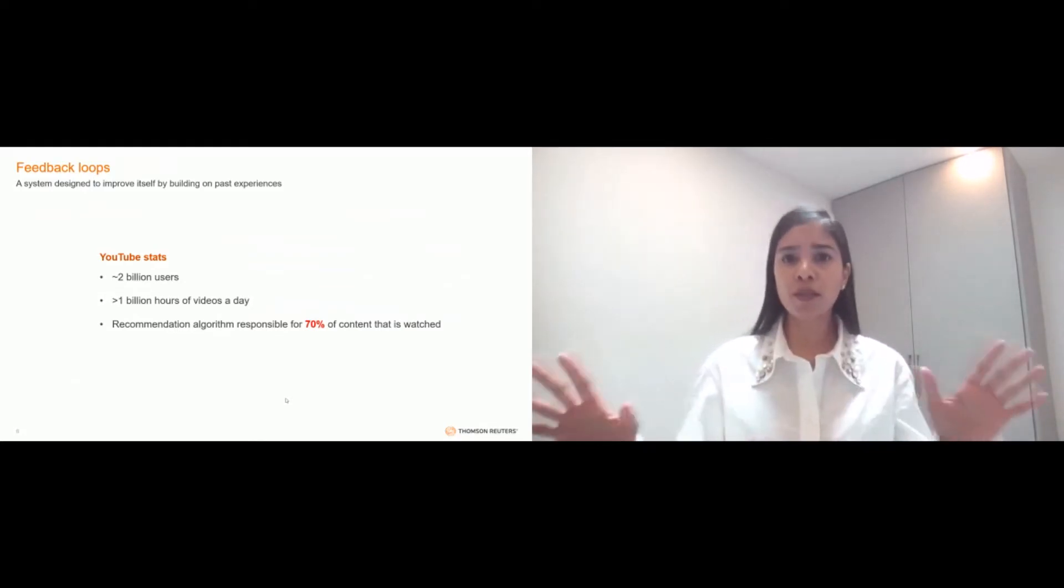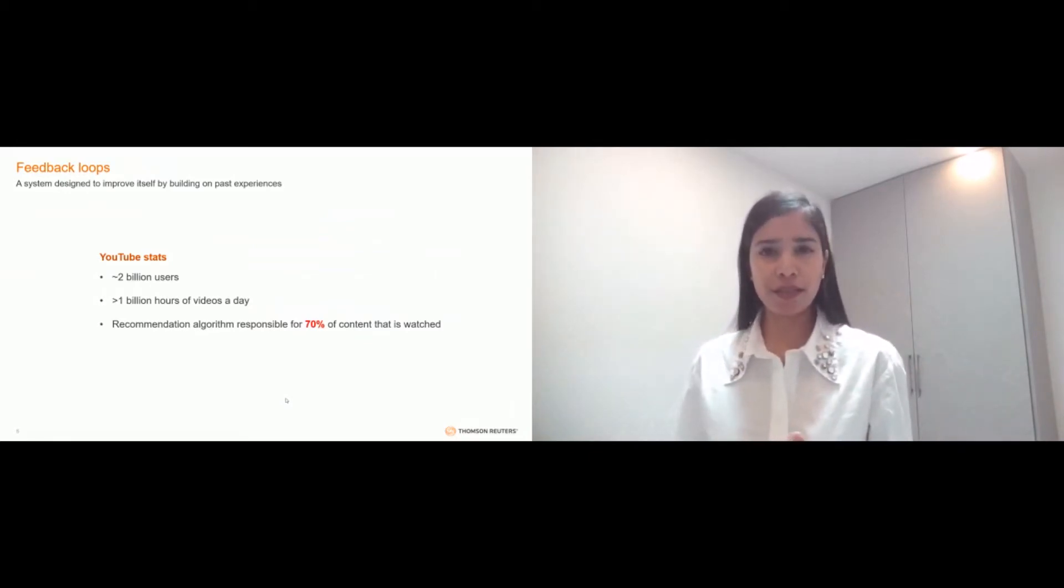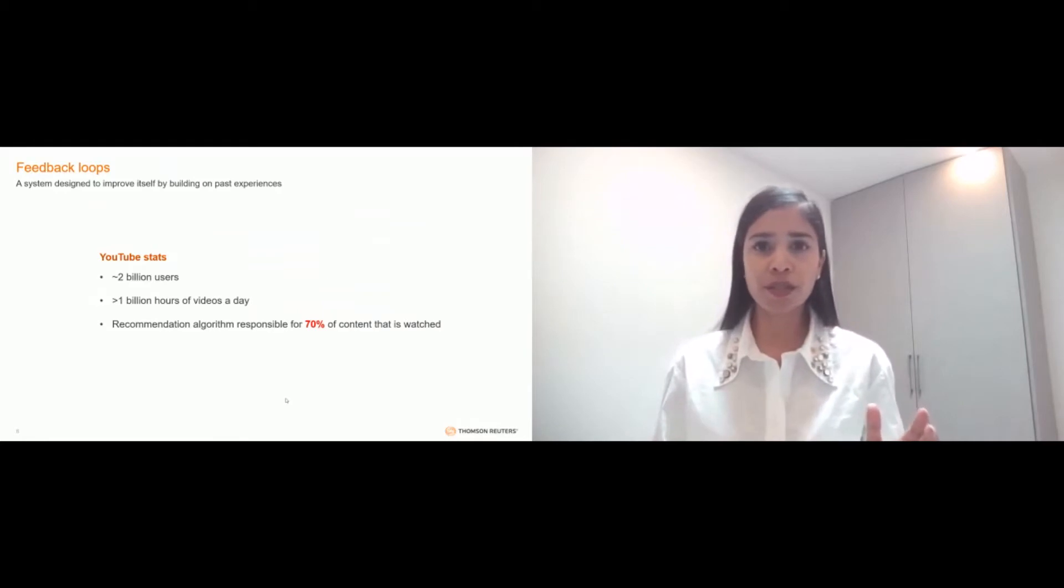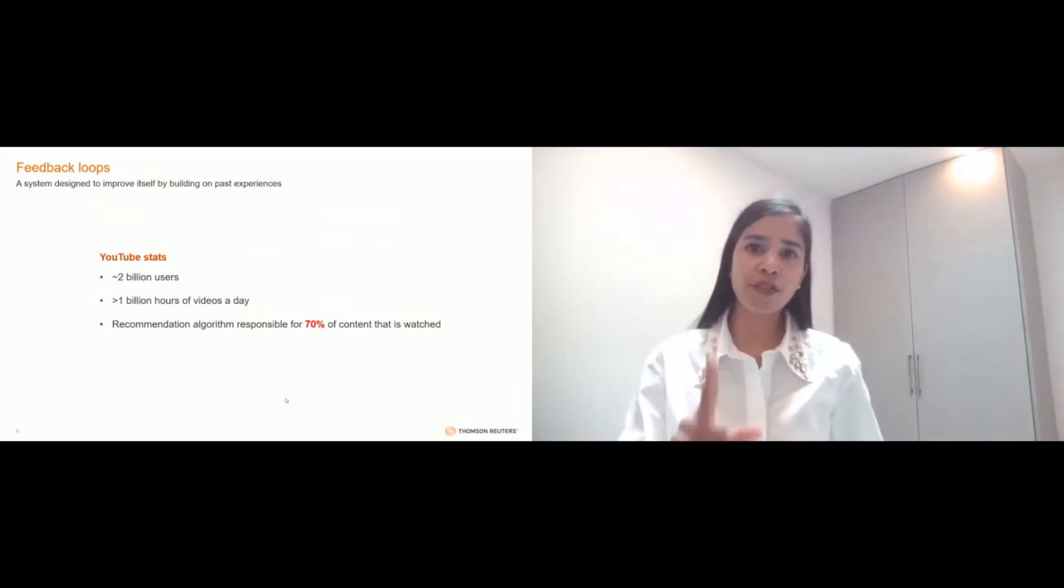Perhaps one of the most commonly known examples of a feedback loop is YouTube's recommendation engine. This engine is responsible for serving over 2 billion users who watch over a billion hours of video a day. And this algorithm is designed to optimize exactly one metric, and that's the number of hours of video that is watched.